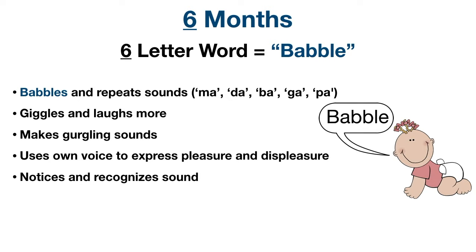The infant will also continue to giggle and laugh more, start to make gurgling noises, and use their own voice to express pleasure and displeasure. This is different from three months — at three months they used laughing, crying, and fussing, but by six months they may use speech-like babbling sounds. They also notice and recognize sounds more, may move their eyes toward sound, pay attention to music, and respond to changes in tone of voice.